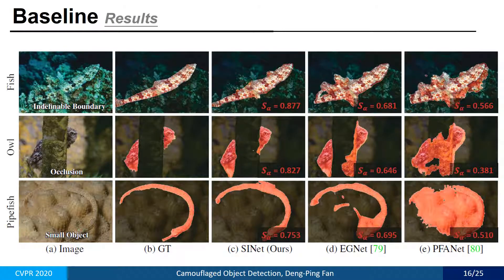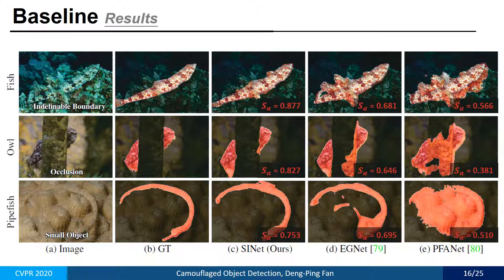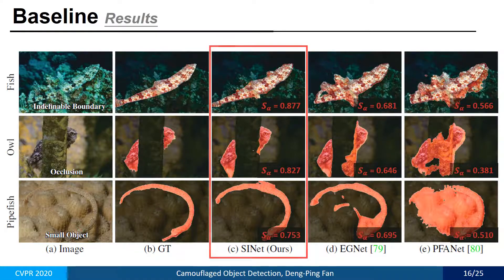Here are some visualization results. For all these challenging cases such as indefinable boundaries, occlusions, and small objects, SINET is able to infer the real camouflaged object with fine details, demonstrating the robustness of our framework.